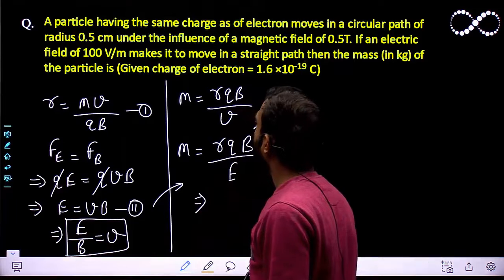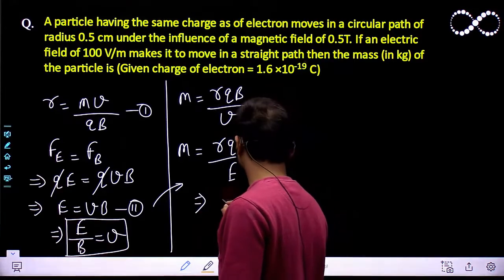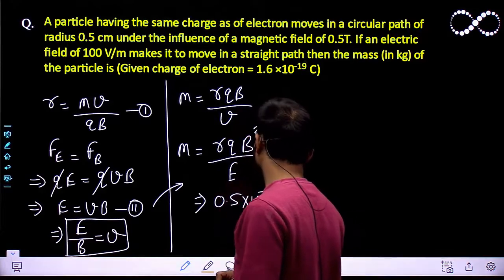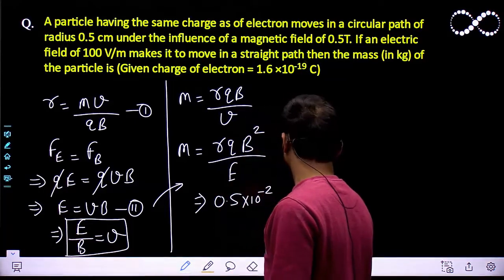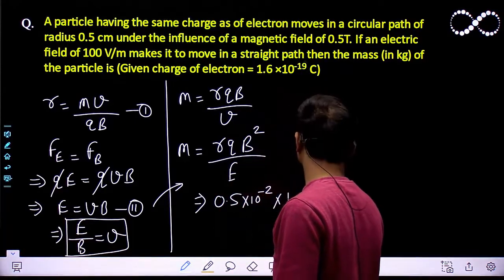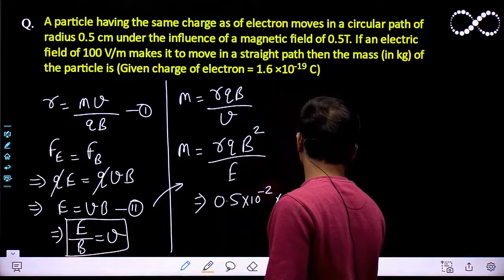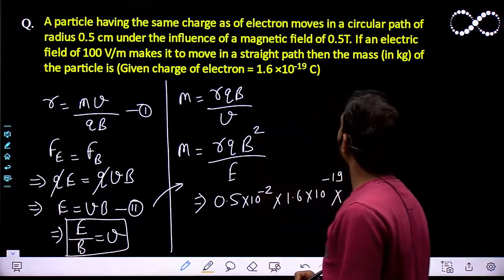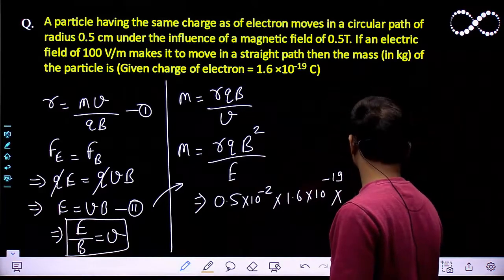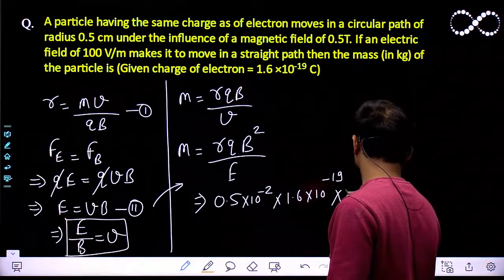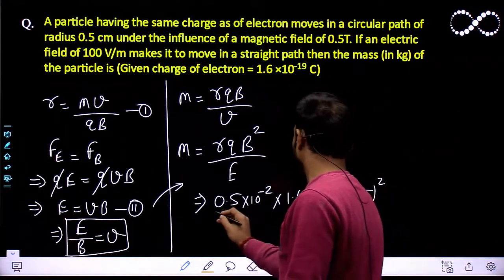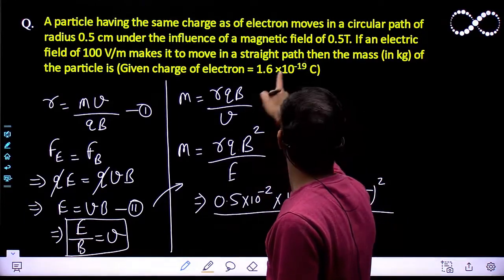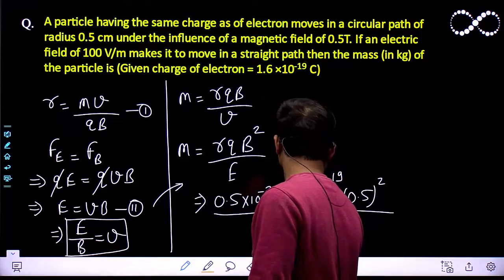Now I need to put in the values. Radius is 0.5 cm, that is 0.5 into 10 to the power minus 2 in SI units. The charge is 1.6 into 10 to the power minus 19. The magnetic field B is 0.5 tesla, so B squared is 0.5 squared, and the electric field is 100 volt per meter.